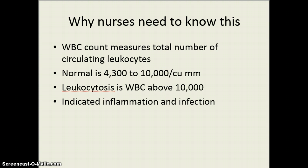So why do we as nurses need to know all this? We need to know because we look at white counts, make suggestions, and work with physicians or healthcare providers to recognize when a patient is being overwhelmed — when we need to think about antibiotics and use good assessment skills to identify them early. Many of our elderly show signs of infection differently than younger people. Urinary tract infections in young people often present with urinary frequency, burning with urination, and flank pain. Older people in nursing homes don't have those symptoms.